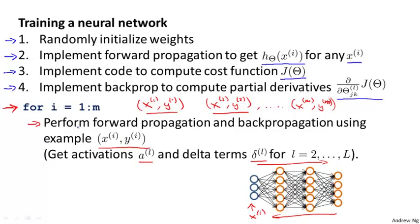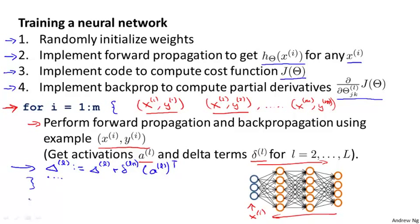Still inside the for loop, we compute the delta accumulation terms using the formula: delta^L times (a^L)^T accumulated across examples. Then finally, outside the for loop, having computed these delta accumulation terms, we compute the partial derivative terms. These partial derivative terms also need to take into account the regularization term lambda — those formulas were given in an earlier video. So having done that, you now have code to compute all the partial derivative terms.